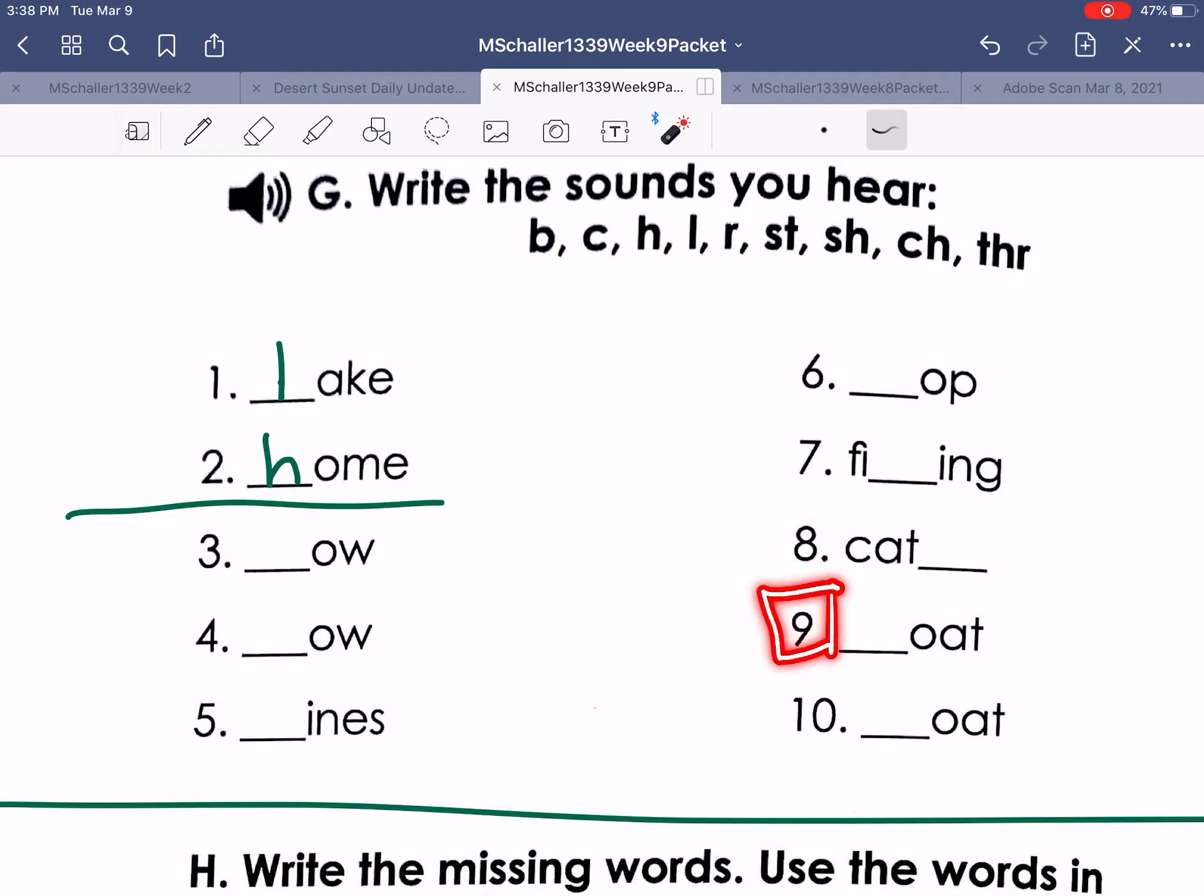Number nine, boat. Boat. Boat. Number nine, boat. And number ten, coat. Coat. Number ten, coat. All right.